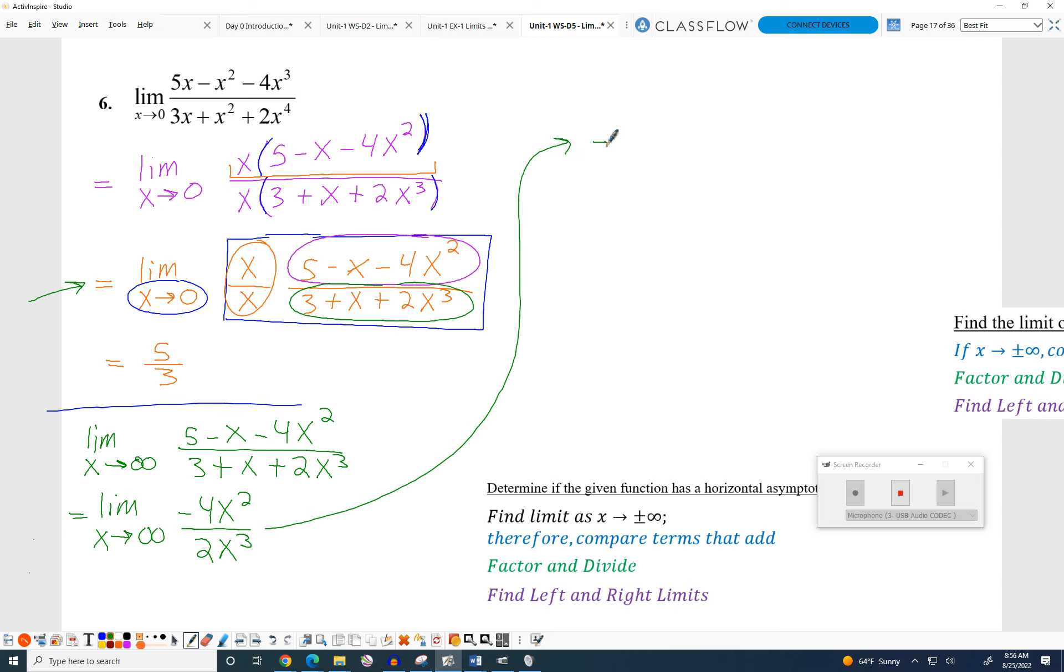I would say equals the limit as X approaches infinity. Let's see. We can break up the factors. So we have negative 4 divided by positive 2. Then we would have an X squared divided by an X squared. And finally, we would have a 1 over X.